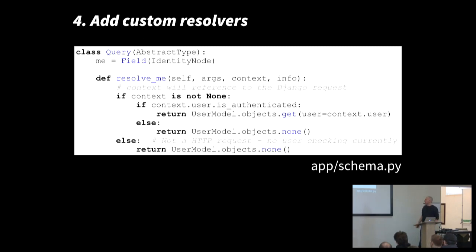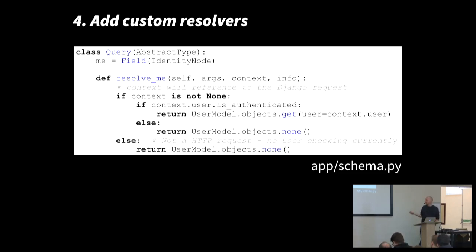Next, some custom resolvers. Here what we're doing is similar to that 'me' example I showed at the beginning — where instead of 'user with ID equals some user', you have a special resolver. Here 'me' looks at the authenticated user and tries to get the person that's logged on, so you can return the current user. You can expand this on top of all your standard nodes — resolve_ can map to anything, and we create them for things like searching.